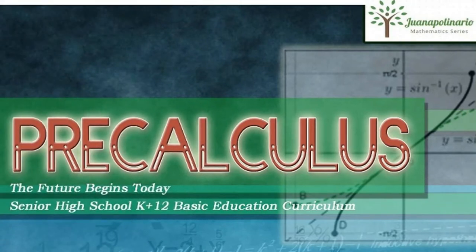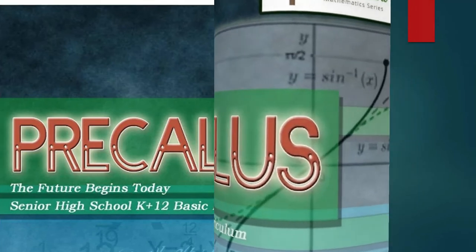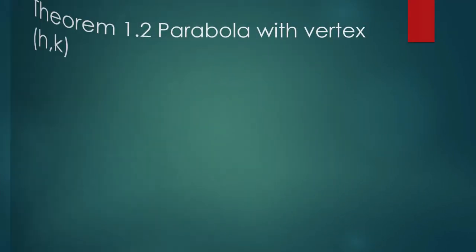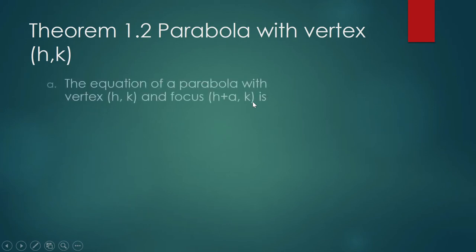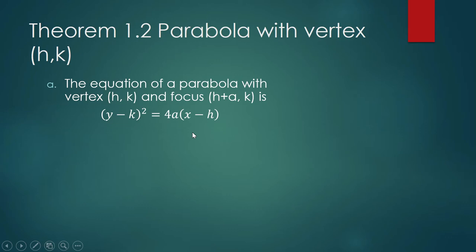In this video we shall sketch a parabola whose vertex can be any point with coordinates h, k — unlike last time when the vertex was at the origin. Let us lay down the equation for a parabola with vertex h, k. If our vertex is h, k and the focus is at h plus a, k, then the axis is horizontal — there is a horizontal movement in the x-coordinate of the focus.